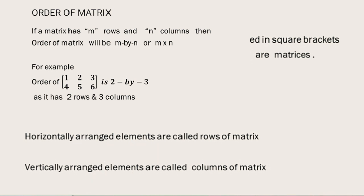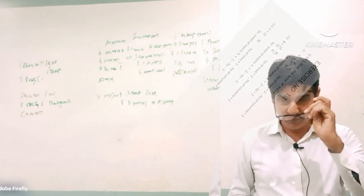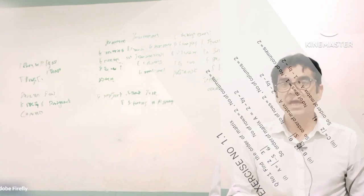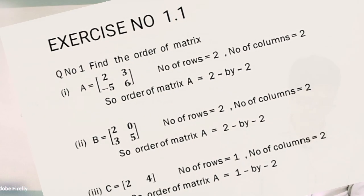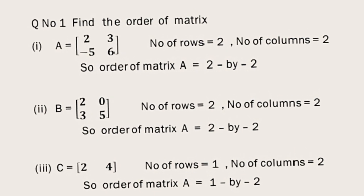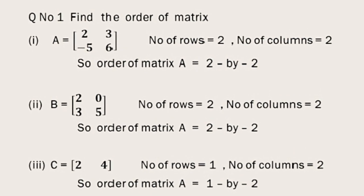Now we shall go to the very first question of exercise number 1.1, in which we have to tell the order of matrices. So here is the first matrix. In this first matrix A: 2, 3, -5, 6, there are 2 rows and 2 columns, so order will be 2 by 2.